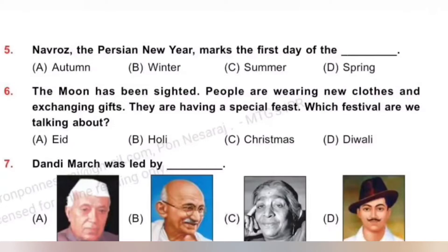Question 6: The moon has been sighted. People are wearing new clothes and exchanging gifts. They are having a special feast. Which festival are we talking about? Options: A. Eid, B. Holi, C. Christmas, D. Diwali. Eid is the religious festival of Muslims. They wear new clothes, exchange gifts and have a special feast on this day. Option A, Eid, is the correct answer.